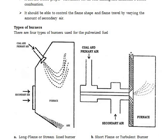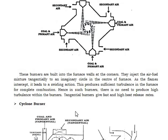Next, you can see the types of burners used for pulverized fuel: the long flame or streamline burner, and the short flame or turbulent burner. These burners are built into furnace walls at the corners; they inject the air-fuel mixture tangentially to an imaginary circle in the center of the furnace, producing flames for complete combustion. Hence, in such burners there is no need to produce high turbulence within the burners.